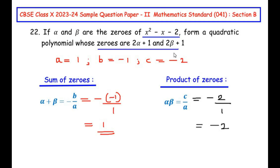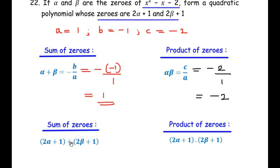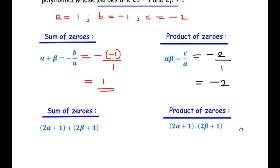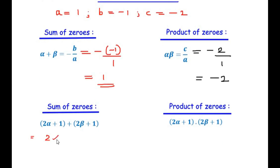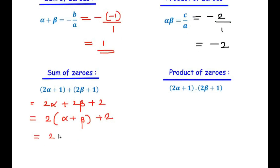Using these values, we find the sum of zeros for the new polynomial with zeros 2 alpha plus 1 and 2 beta plus 1. Adding them: 2 alpha plus 1 plus 2 beta plus 1 equals 2 alpha plus 2 beta plus 2. Taking 2 common gives 2 times (alpha plus beta) plus 2. Substituting alpha plus beta equals 1, we get 2 times 1 plus 2, which equals 4. So the sum of zeros of the new polynomial is 4.